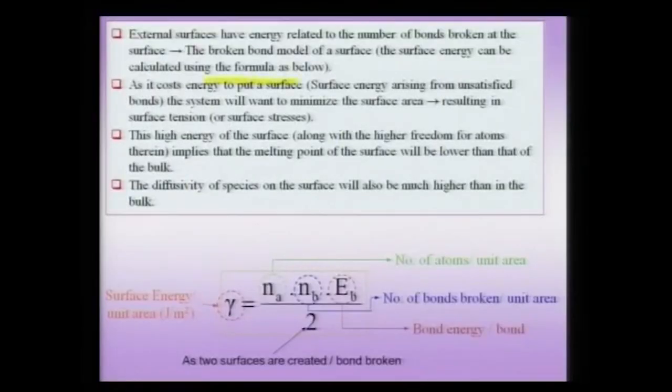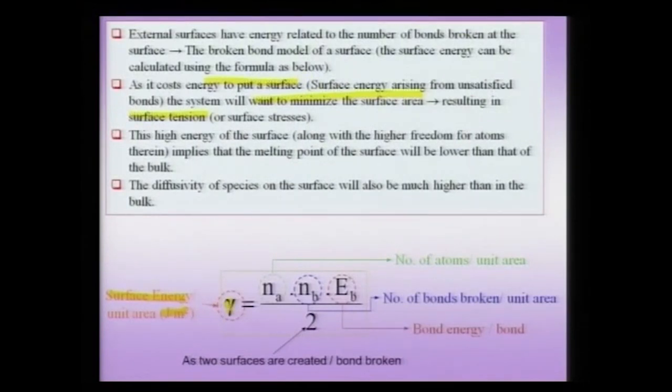The simplest way to calculate the energy of a surface is to assume that after making the cut, the surface remains unaltered and is exactly the same as the bulk — a termination of the bulk. In this case, I can calculate the energy based on the number of bonds broken. The surface energy, in joules per meter square, is usually designated by gamma. We are considering just the surface energy initially, not surface free energy — meaning we are ignoring entropic terms.